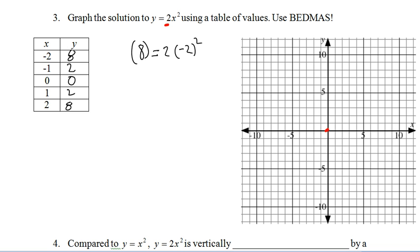So we're going to have 0, 0, negative 1, 2, negative 1, 2, negative 2, 8, and 2, 8. And there's our parabola.